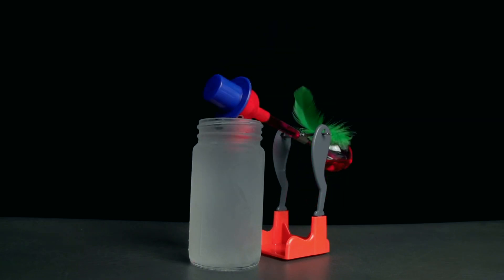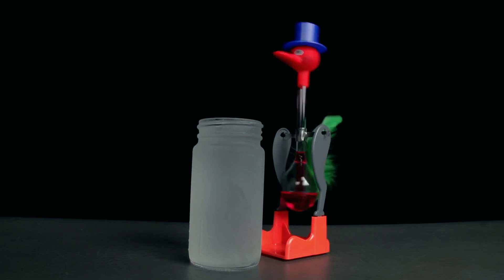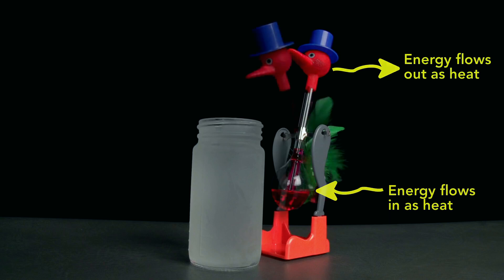Then, when it drinks, the pressure in the head and base start to equalize, so liquid returns to the base, but the overall temperature of the bird is now just a little below ambient temperature. When it returns to upright, the base draws in energy as heat, the head then rejects some energy as heat, and the bird drinks again.